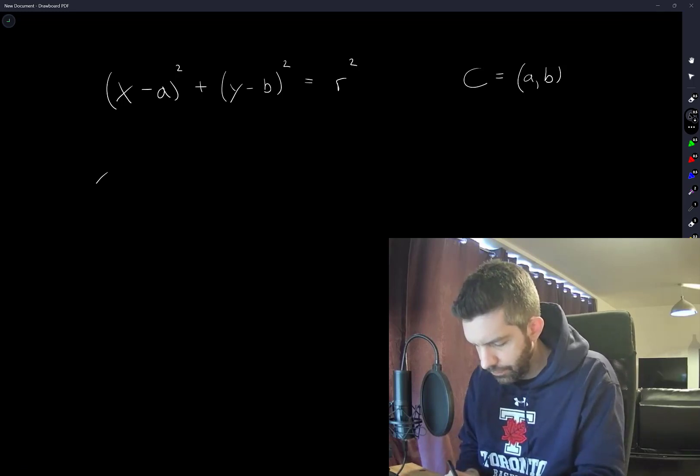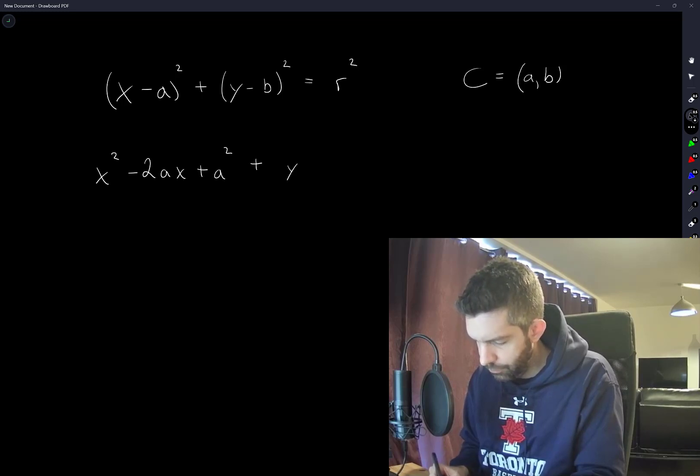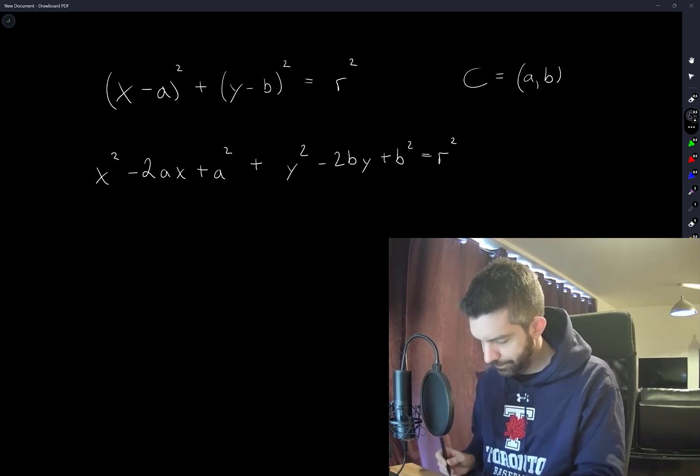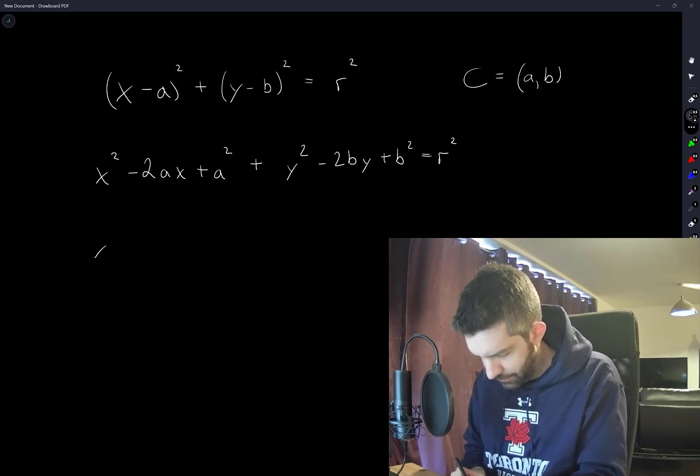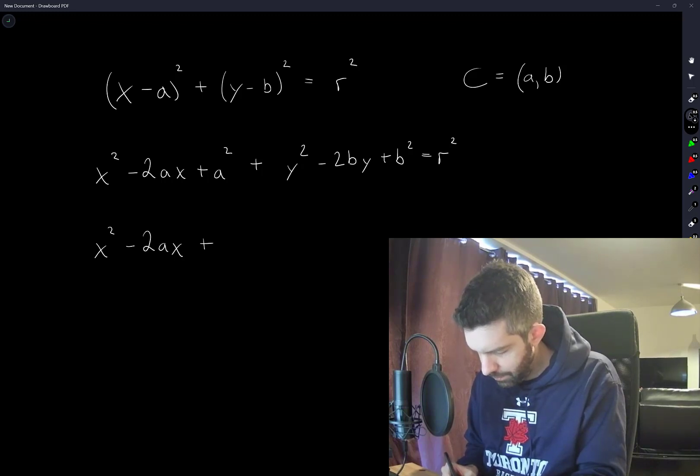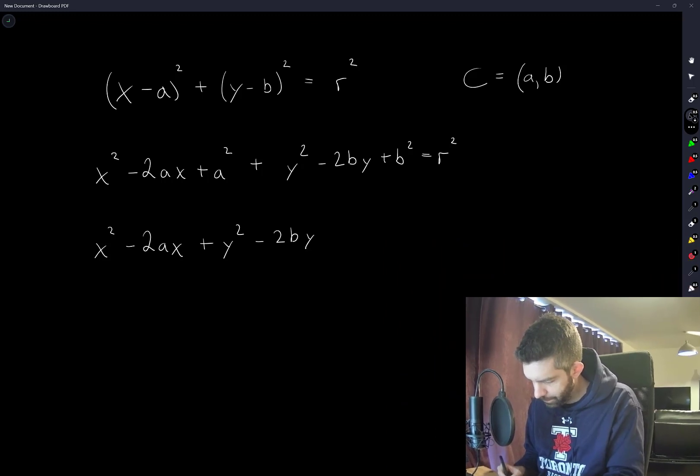x² - 2ax + a² + y² - 2by + b² = r². So I have x² - 2ax + y² - 2by + a² + b² - r² = 0.